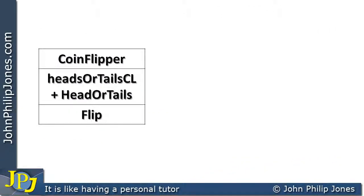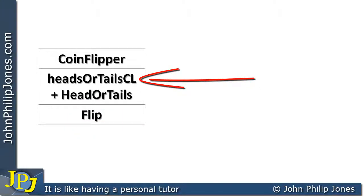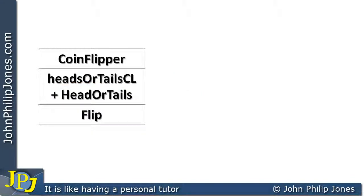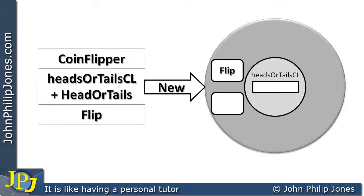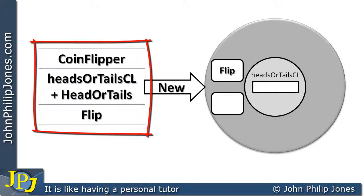Here is the class again. We can still see it has the name CoinFlipper and the same behavior — the same method flip — but in the center now, in addition to the variable headsOrTailsCL, we can see we need the addition of the property procedure called headsOrTails. When we produce an instance of this, we construct the object and it will look like this: in the execution space we have the method flip, the class-level variable headsOrTailsCL, and the property procedure headsOrTails. The property procedure and the headsOrTailsCL variable go together, giving us a more accurate picture of this class.